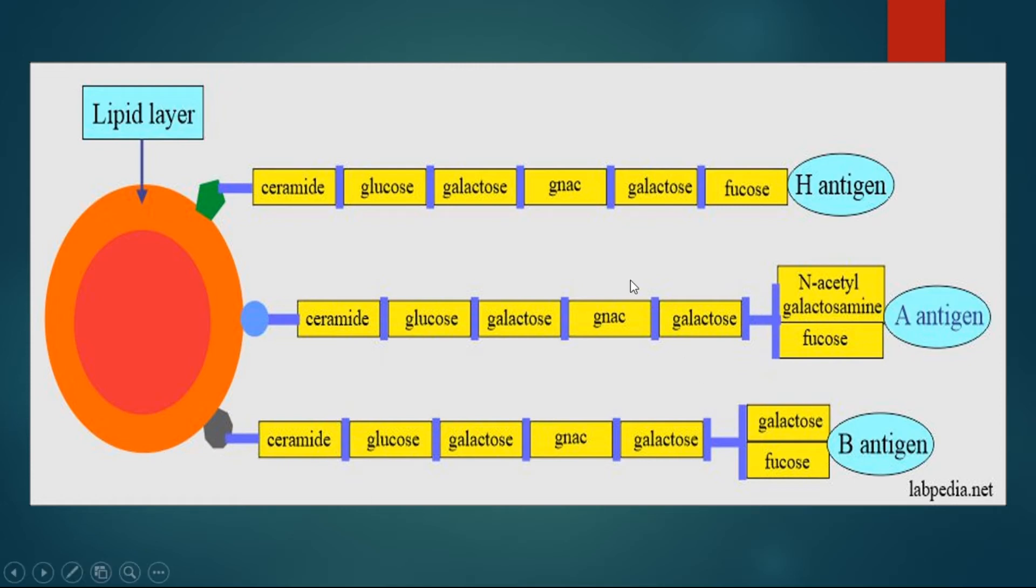But if this fucose is added with N-acetylgalactosamine, the blood group will be A because it will form A antigen. And if this fucose is added with galactose, the blood group will be B because this will make antigen B.